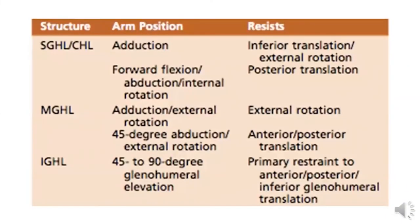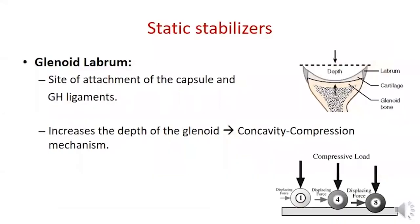Each ligament resists humeral head translation in a certain direction at a certain arm position, as shown in this table. The glenoid labrum provides a site for attachment of the capsule and glenohumeral ligaments and increases the depth of the glenoid, contributing to the concavity compression mechanism. In the absence of concavity, only minimal force is required to displace the humeral head, whereas a deeper concavity requires greater dispersing force for a given compressive load.